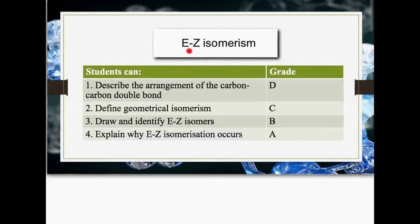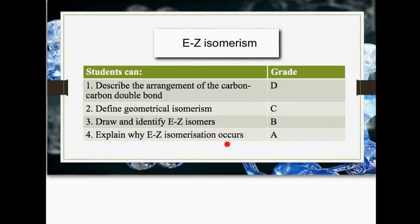This lesson is on EZ isomerism. By the end of this video you should be able to describe the arrangement of the carbon-carbon double bond, define geometrical isomerism, draw and identify EZ isomers, and explain why EZ isomerisation occurs.